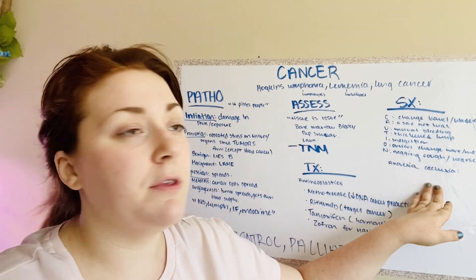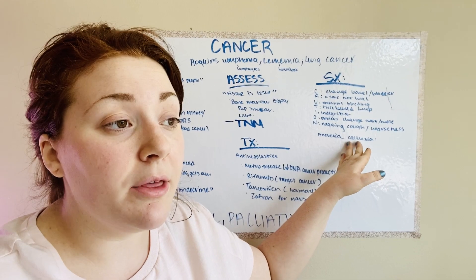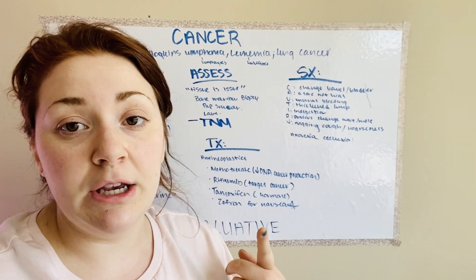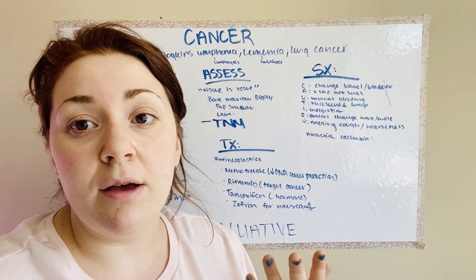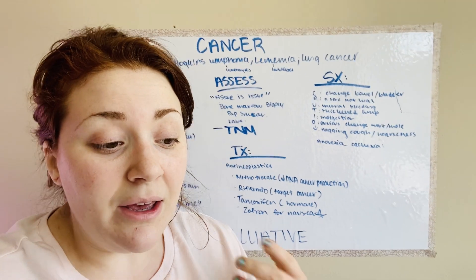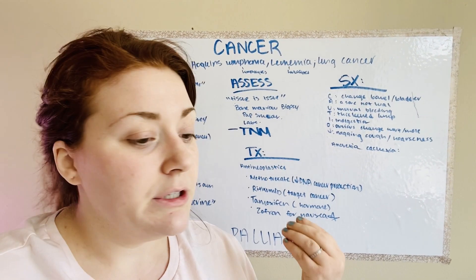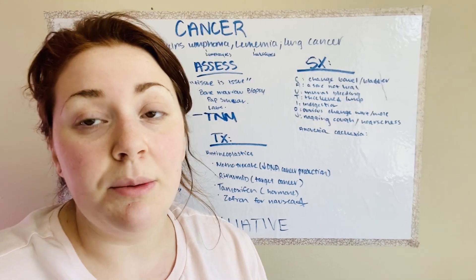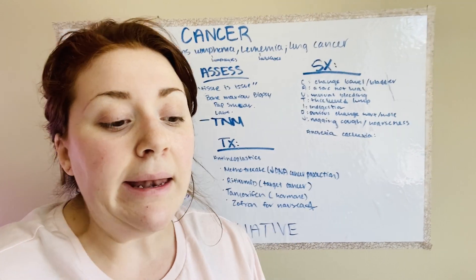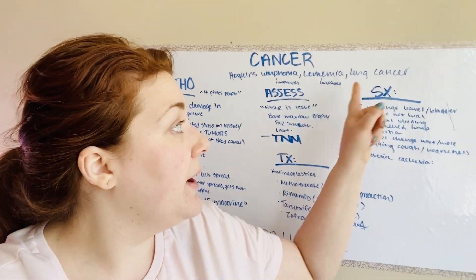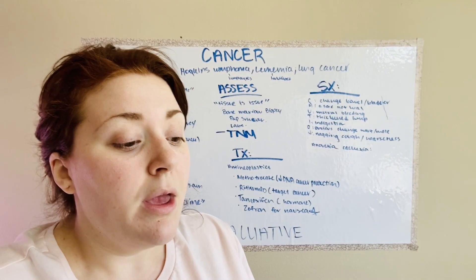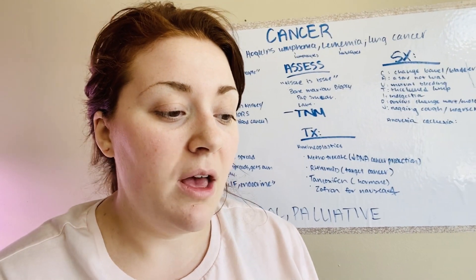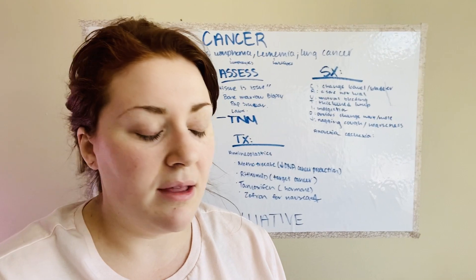What symptoms will a cancer patient present with? We have the acronym CAUTION: C — change in bowel and bladder; A — a sore that does not heal; U — unusual bleeding; T — a thickened lump; I — indigestion; O — an obvious change in a mole or wart, like with melanoma; N — a nagging cough or hoarseness, which is found with lung cancer. And anorexia and cachexia — the wasting of fat and muscle seen in cancer patients.